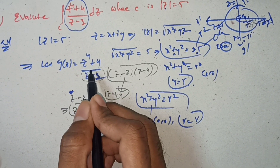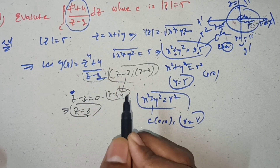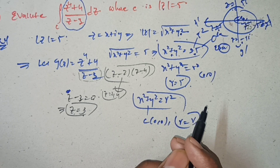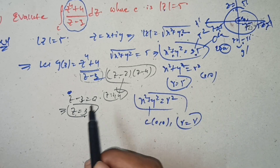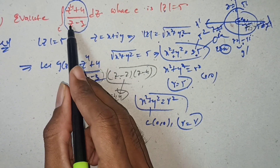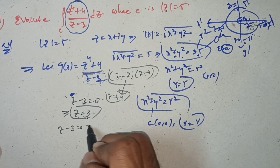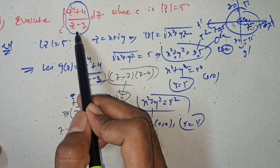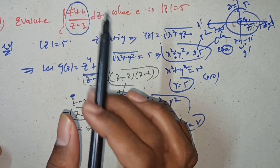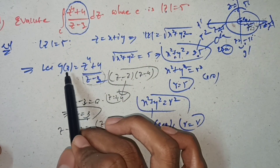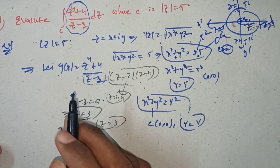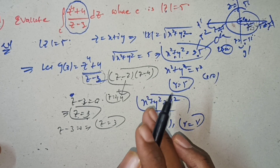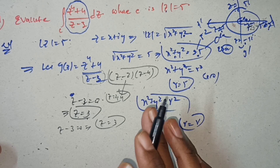Since g(z) = (z⁴+4)/(z−3), and z = 3 lies inside the curve |z| = 5, we note that g(z) is analytic within and on C except at z = 3.